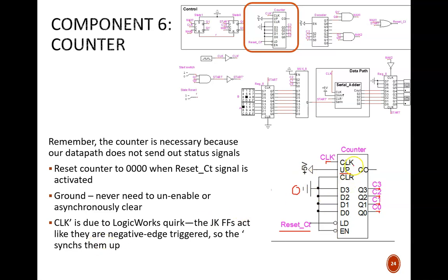This plus 5 volt signal tells the counter to always count up rather than down. Lastly, due to an unfortunate quirk in LogicWorks where the JK flip-flops behave as if they are negative edge triggered, a clock prime signal is used here to keep the counter synchronized with the rest of the circuit.